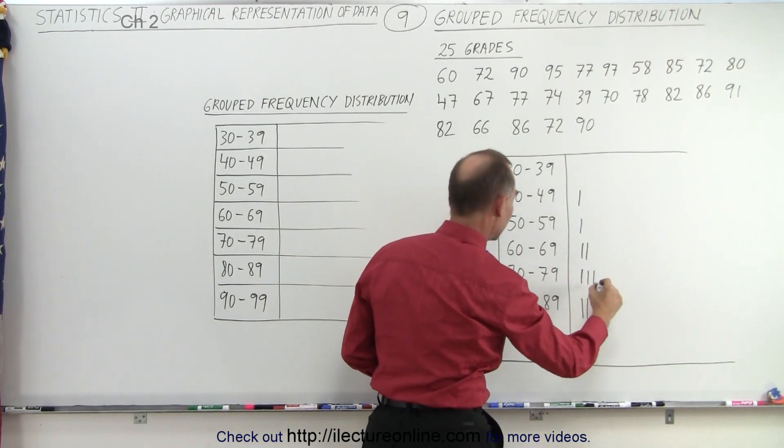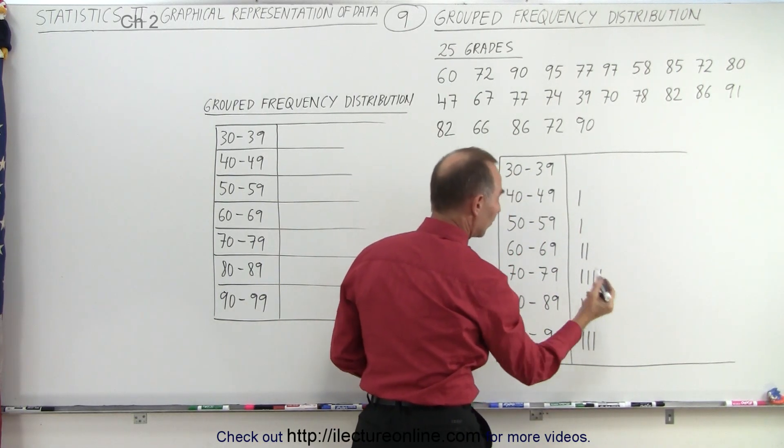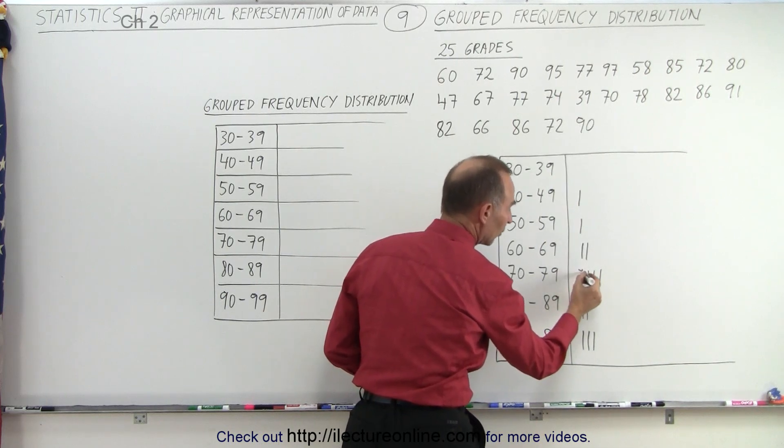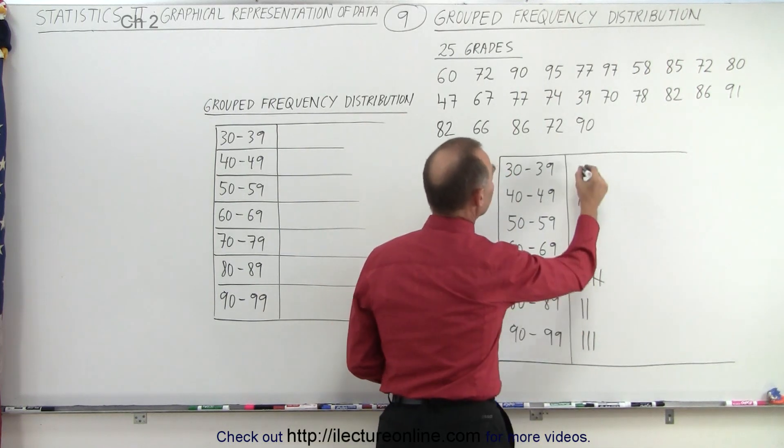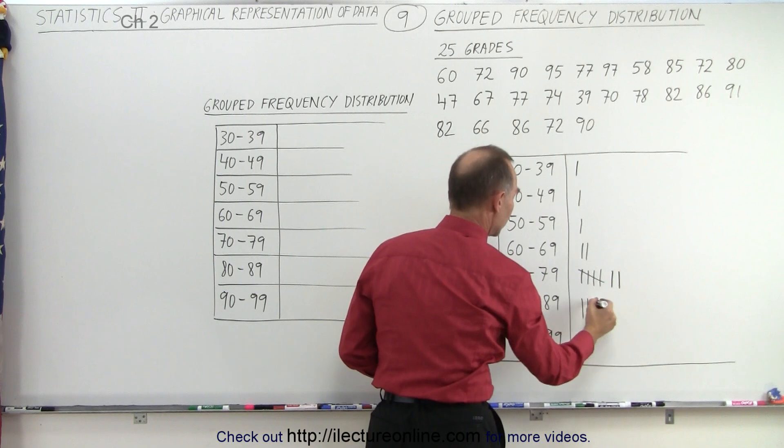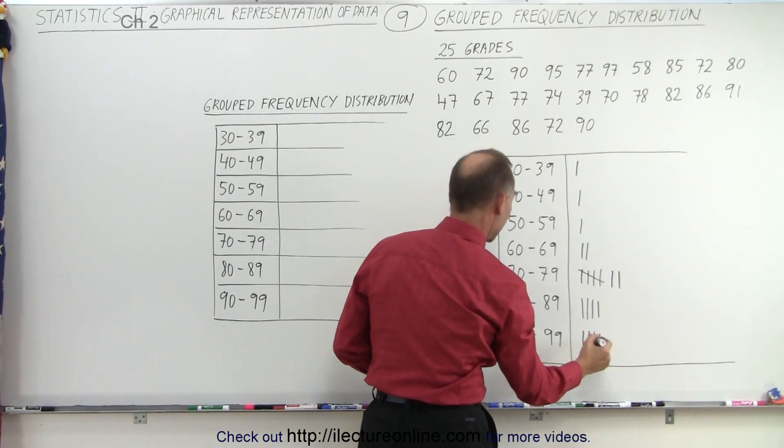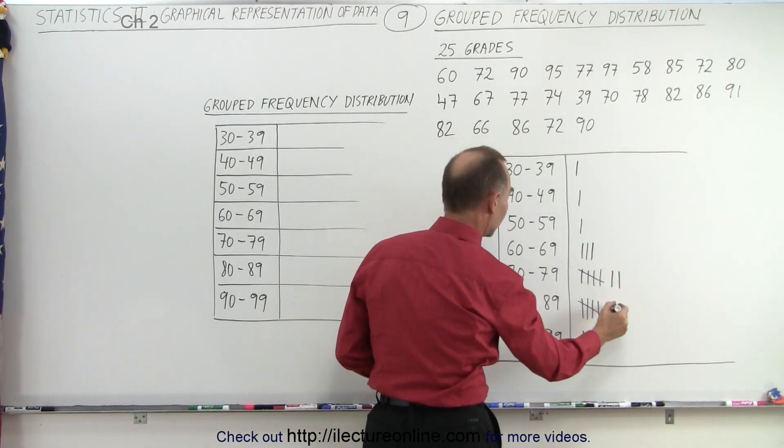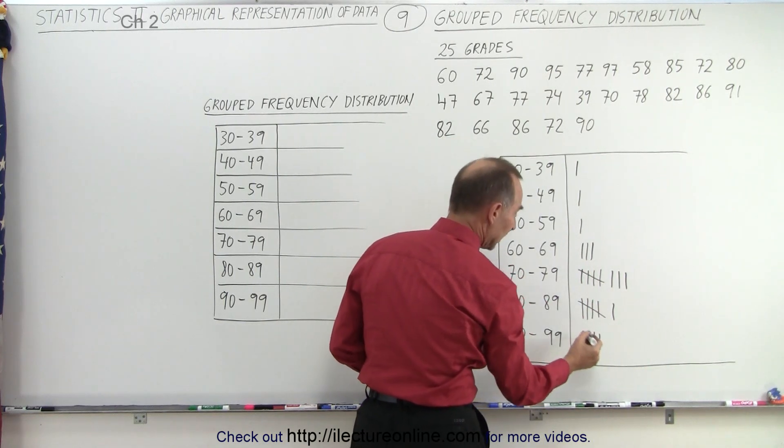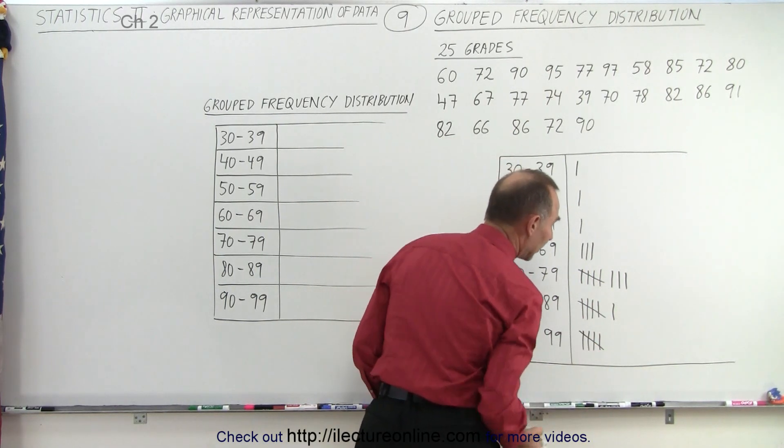47, 67, 77, 74. So that's our fifth one in that group, then so we put a line there. 39, 70, 78, 82, 86, 91, 82. That's our fifth one in that group, so we'll put a line this way. 66, 86, 72, and 90. That's our fifth one in that group, so we'll put a line through there.